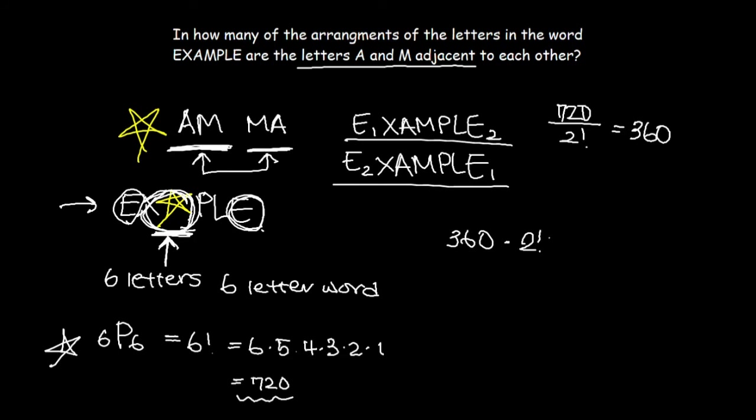Since we have to also consider the permutation within the letters, we have to multiply by two factorial once more. Why? Because 360 is only talking about the combinations we can have where the letter arrangements are in the order A and M. However, we can also have everything the same except that we have M in front of A. They're not the same thing, but they still represent that letters A and M are adjacent to each other. So we have to multiply by two factorial again, bringing us back to 720.